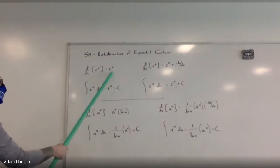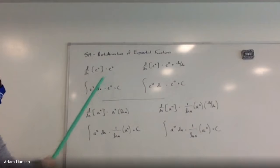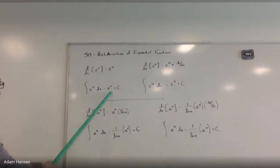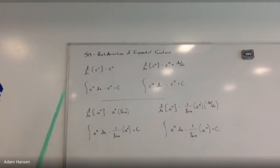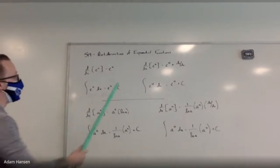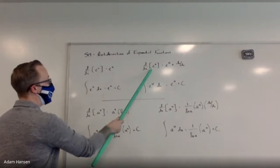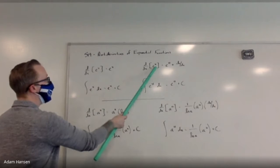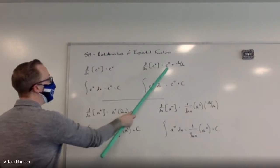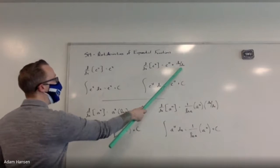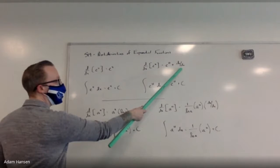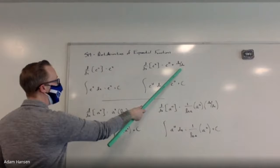The derivative of e to the x is itself e to the x, so the anti-derivative of e to the x would just be e to the x plus C. If I have an inner function — if I have e to some other function in terms of x — the derivative of e to the u would be e to the u times u prime, or du/dx notation.